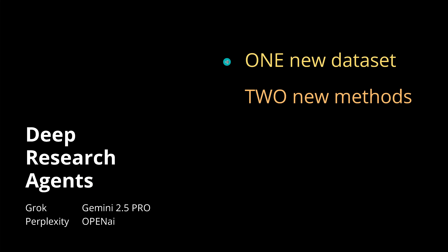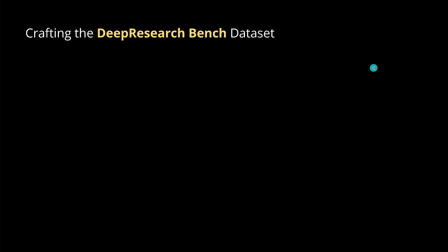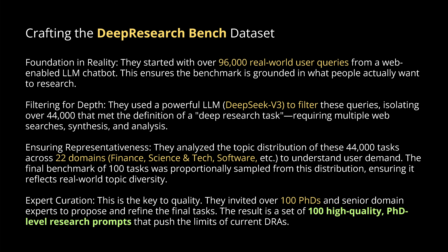First, they had to design a new dataset, because we want a really complicated benchmark — our LLMs are excellent and our agents are very good. They used two new evaluation methods. For the dataset, they looked at about 100,000 real-world user queries, then used DeepSeek V3 to filter them down to 44,000. Then they focused on 22 domains across different topic distributions.